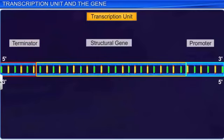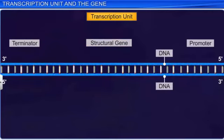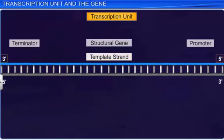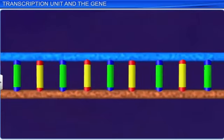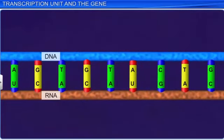The next part of the transcription unit is the structural gene, which consists of two DNA strands having opposite polarity. The strand with the three prime to five prime polarity acts as a template and is called the template strand. While the DNA strand which has five prime to three prime polarity is known as the coding strand and is displaced during transcription. The sequence of this strand is the same as that of RNA, except that thymine exists in place of uracil.